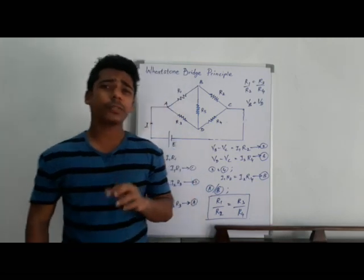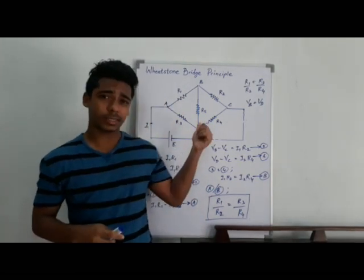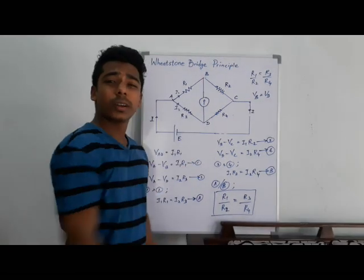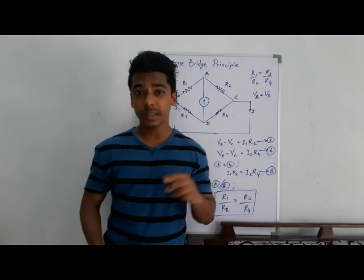Now, instead of these R5 resistors, let's replace a center zero galvanometer. So it is easy for us to identify whether the bridge is balanced or not.